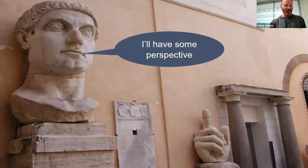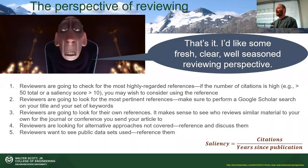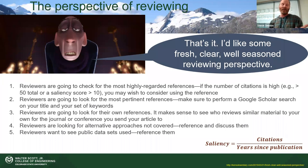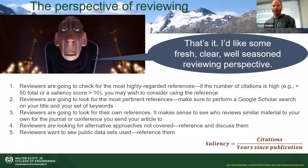Now let's get to perspective. Reviewers are going to check for those most highly regarded references — usually associated with citations, but not always. There could be things highly regarded in a niche area not cited a lot but that everyone's aware of. If the number of citations is high — more than 50, or a saliency score of more than 10 — that's a possibly influential article you might want to consider reading to see if it matters.